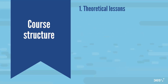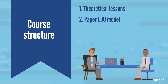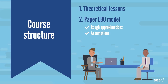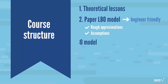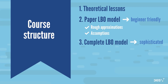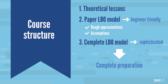Once we do that, we'll be ready to solve a paper LBO model. It is an essential part of the private equity interview process. Usually at interviews, you're not allowed to use a calculator to solve this model, as you're asked to do some very rough approximations and assumptions. However, we'll solve our paper LBO in Excel, adding a thin layer of sophistication to it. Finally, we'll be able to build a complete LBO model from scratch, much more sophisticated than the paper LBO. We'll gradually cover everything you need to know about LBOs step-by-step to ensure you make the most out of this course.